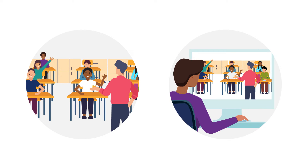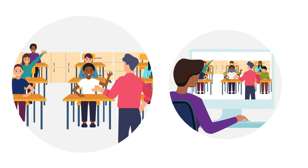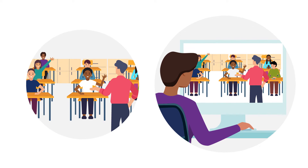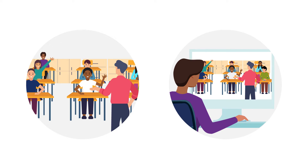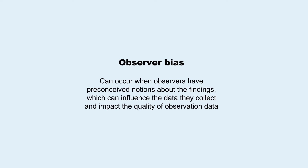Observations can be done by one or more people observing live, in-person or virtual sessions, or watching a video recording of a previous session. Regardless of the format, observations should be conducted consistently to reduce observer bias. Observer bias can occur when observers have preconceived notions about the findings, which can influence the data they collect and impact the quality of observation data.